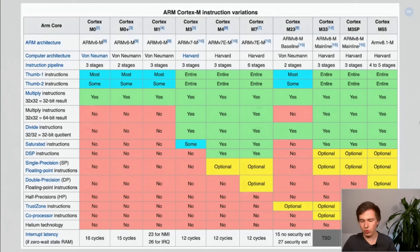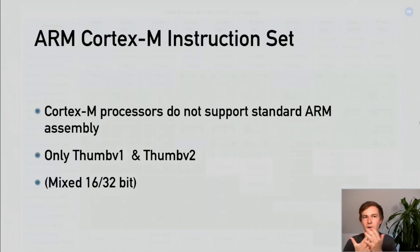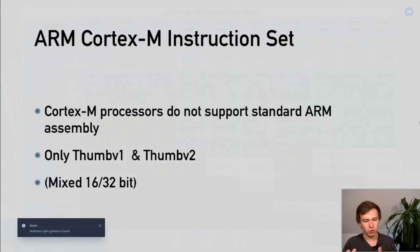If you've written code for older ARM processors, you probably know the original ARM instruction set is a fixed 32-bit instruction set. This is not supported on ARM Cortex-M devices — instead, they only support the Thumb and Thumb-2 instruction sets, giving you 16-bit instructions and sometimes 32-bit instructions with Thumb-2.